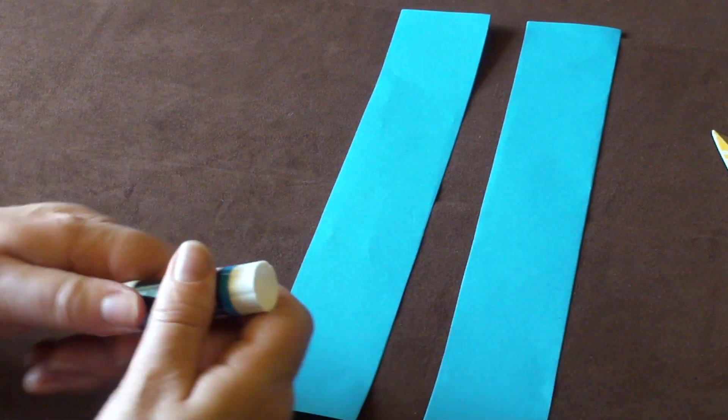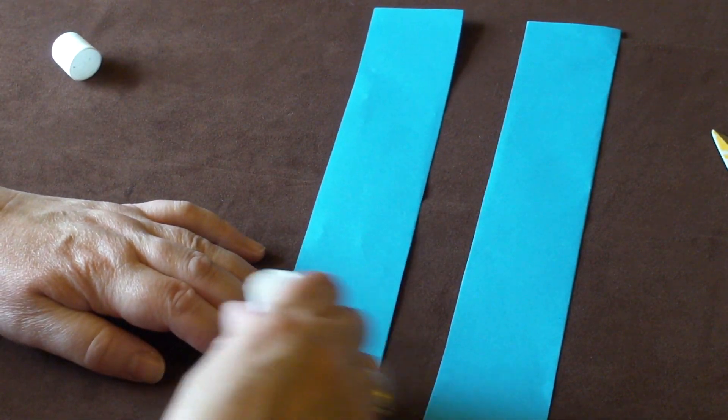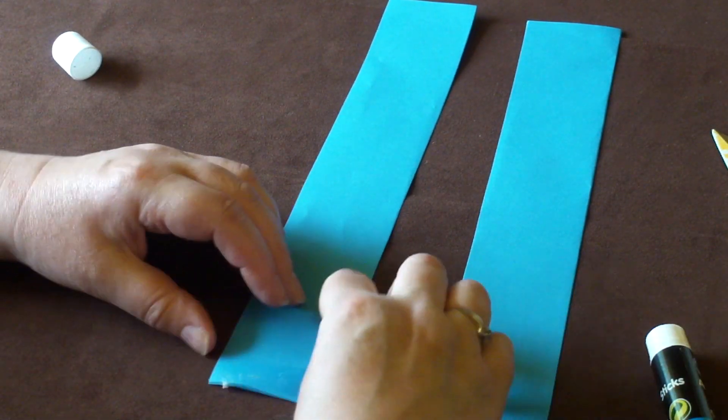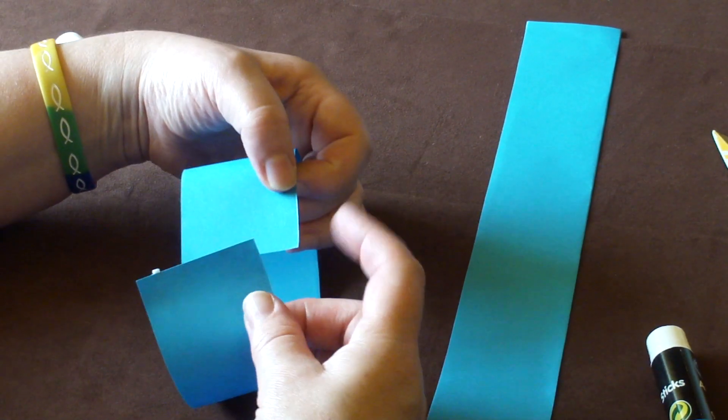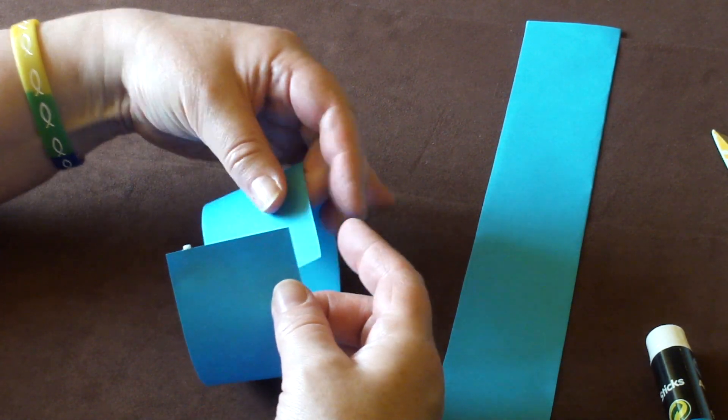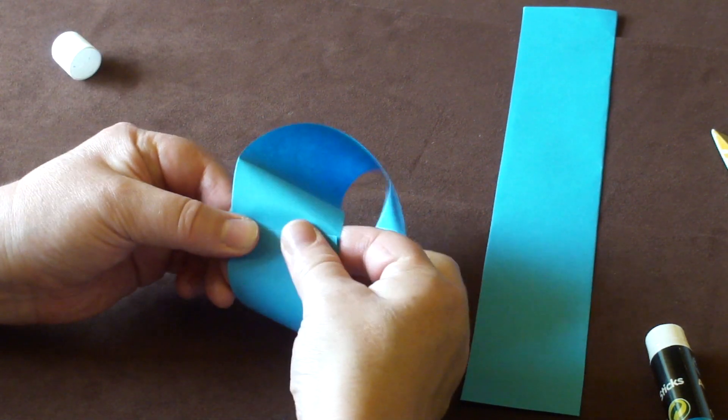So, starting off, to make our Mobius strips, we're going to put a decent helping of glue and join it into a ring. But before I glue, I'm going to put this right-hand edge over the top, and then glue them to make my first Mobius strip.